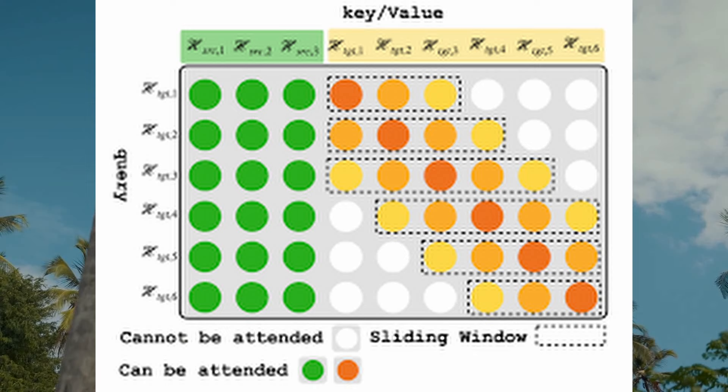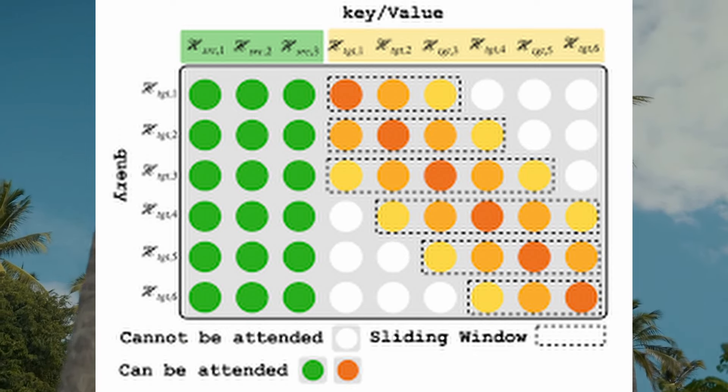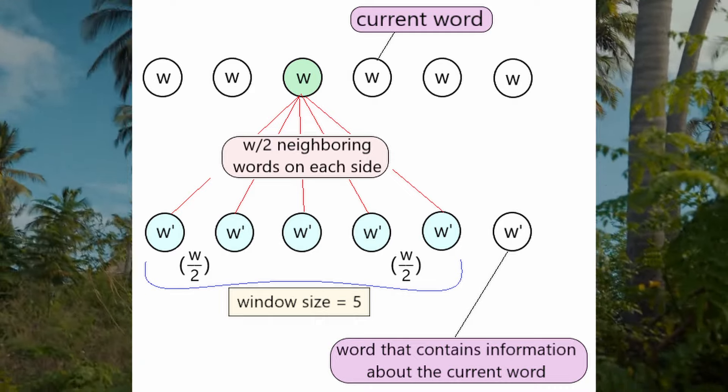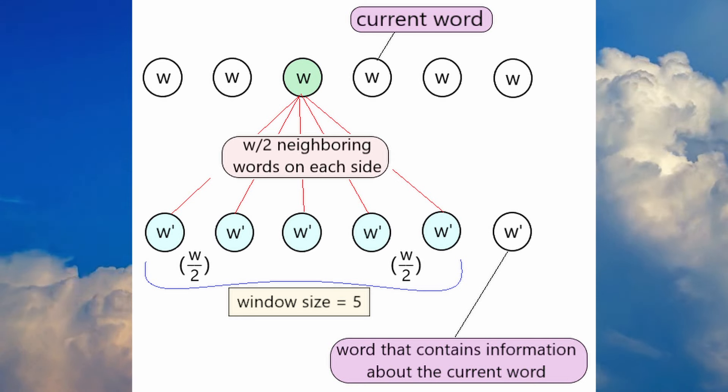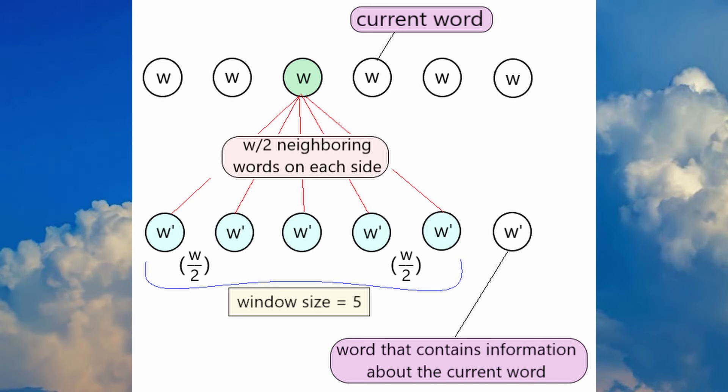The vanishing gradient problem is a difficulty that arises during training of deep neural networks. It refers to gradients becoming too small for earlier layers during back propagation, leading to insufficient learning. The consequence is that weights in the early layers of the network barely change, making it difficult or impossible for the model to learn from its input data.